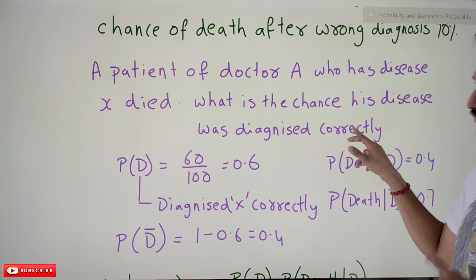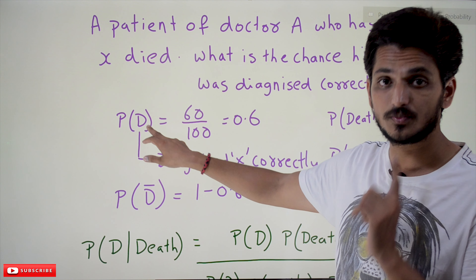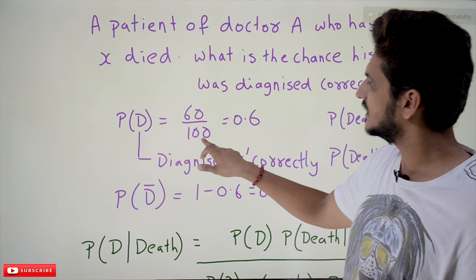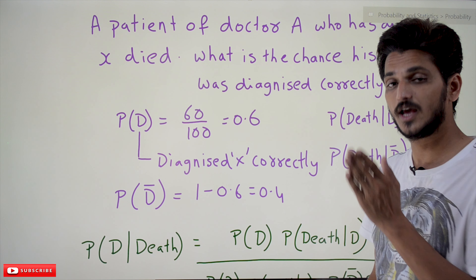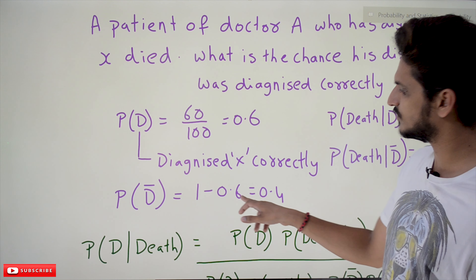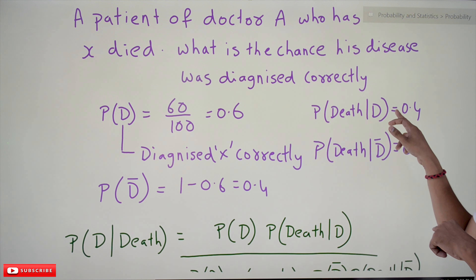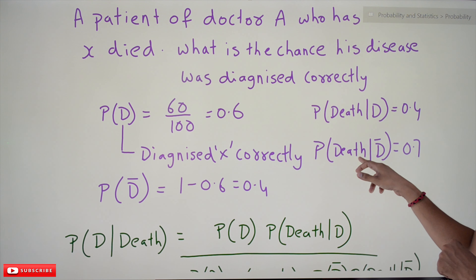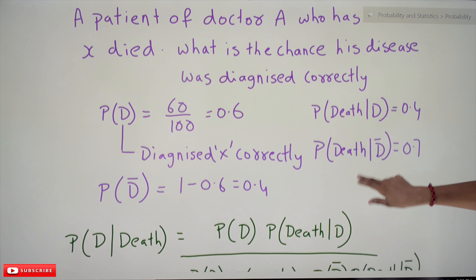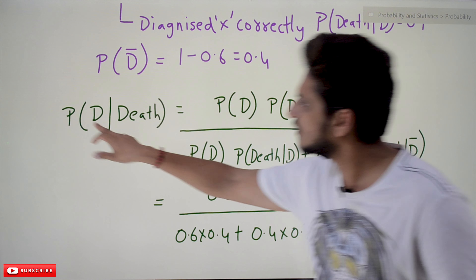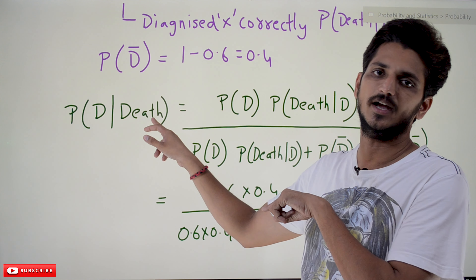From the given statement: probability of D (diagnosed properly) = 60/100 = 0.6. Probability of D complement (not diagnosed properly) = 1 − 0.6 = 0.4. Probability of death given diagnosed properly = 0.4. Probability of death given not diagnosed properly = 0.7. We need to find the probability of being diagnosed properly given the patient has died.